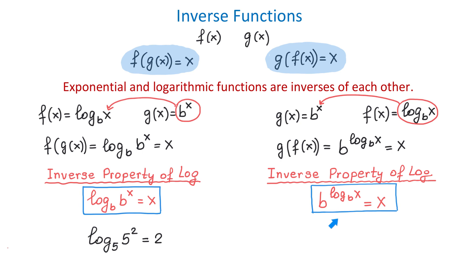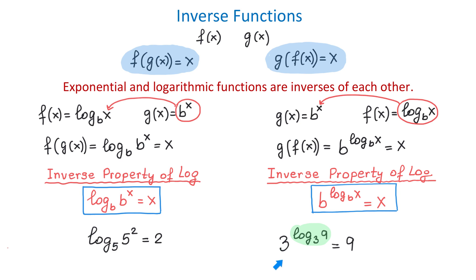This property can also be used to simplify or evaluate logarithms. An example would be 3 to the power of log base 3 of 9 equals 9. When this base is the same as this base, this result is the same as this argument. To verify this, let's evaluate the exponent log base 3 of 9: 3 to what power equals 9? That would be 2. So the value of this logarithm is 2, and then 3 to the 2nd power equals 9.